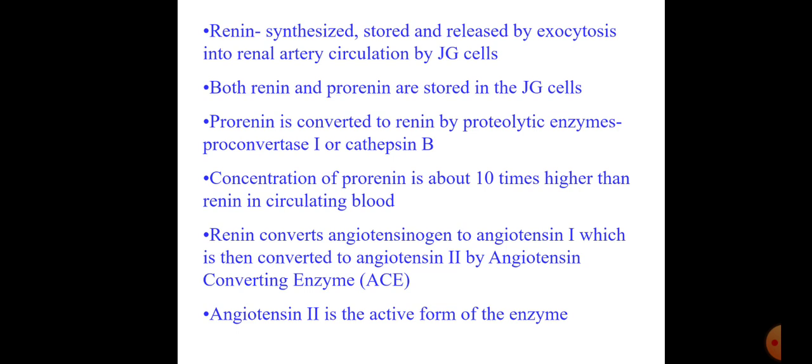There is also a chemical called pro-renin, which is stored in the JG cells. Pro-renin is converted to renin by proteolytic enzymes — proconvertase 1 or cathepsin B. The concentration of pro-renin is about 10 times higher than renin in circulating blood. Renin converts angiotensinogen to angiotensin 1, which is then converted to angiotensin 2 by angiotensin converting enzyme (ACE). Angiotensin 2 is the active form.